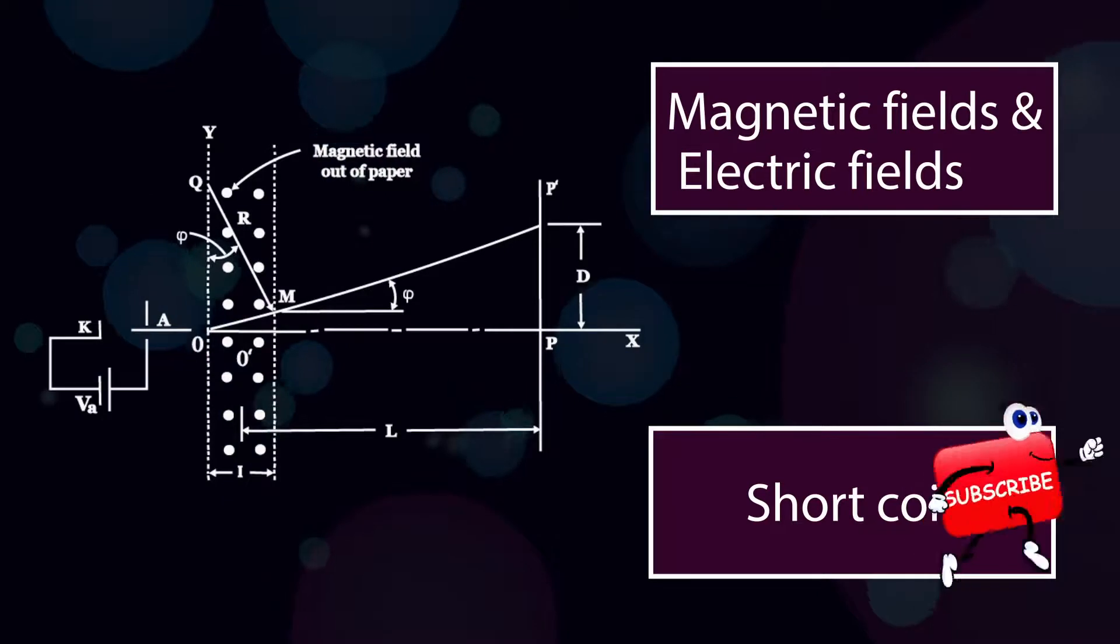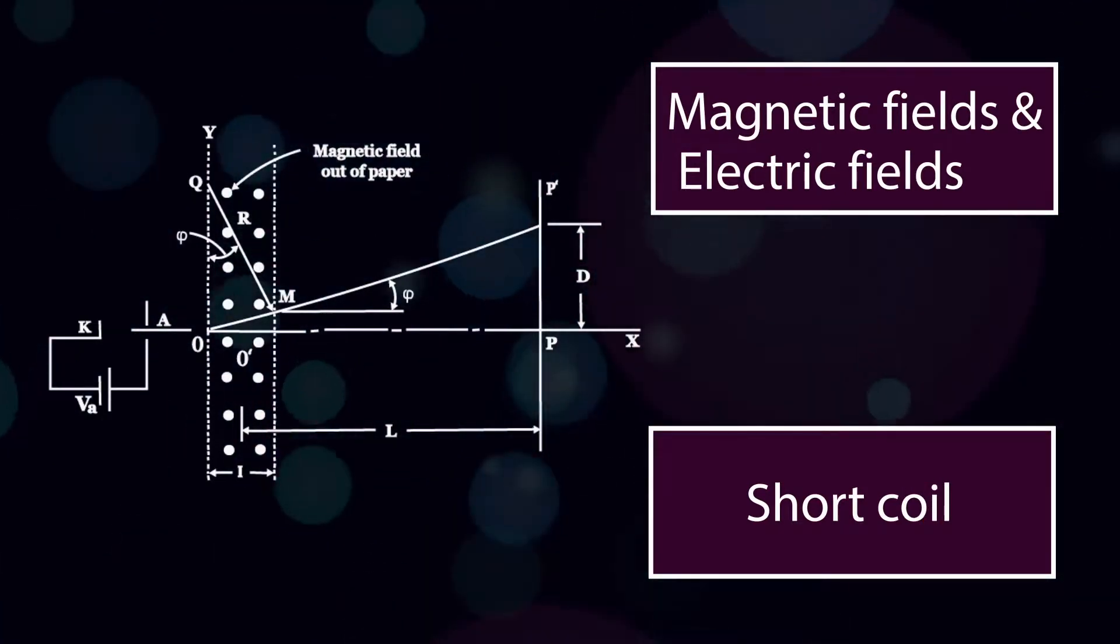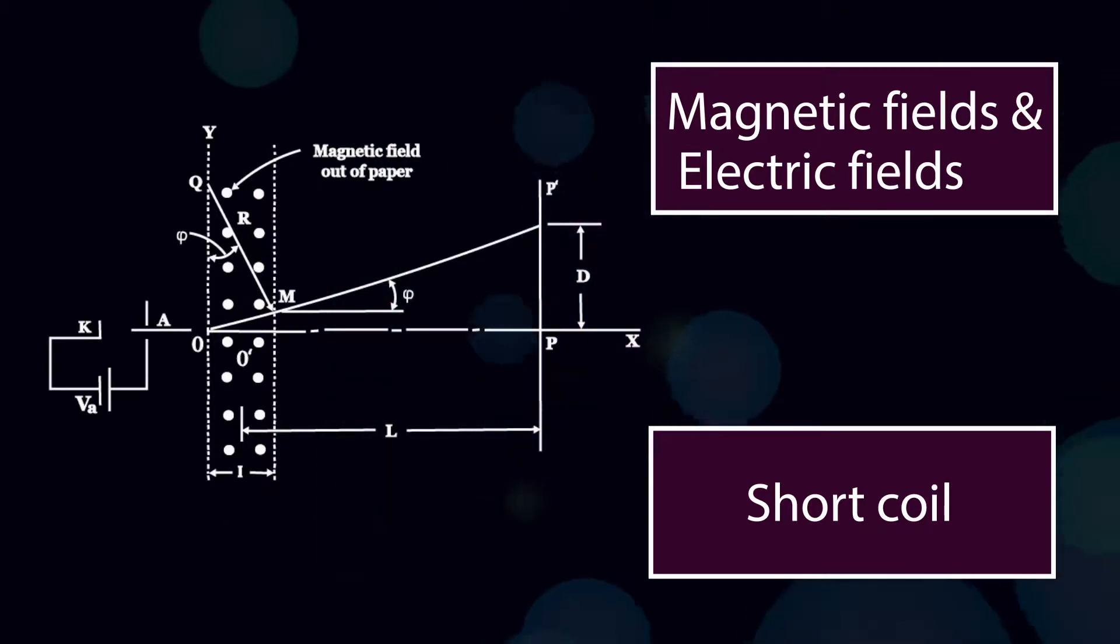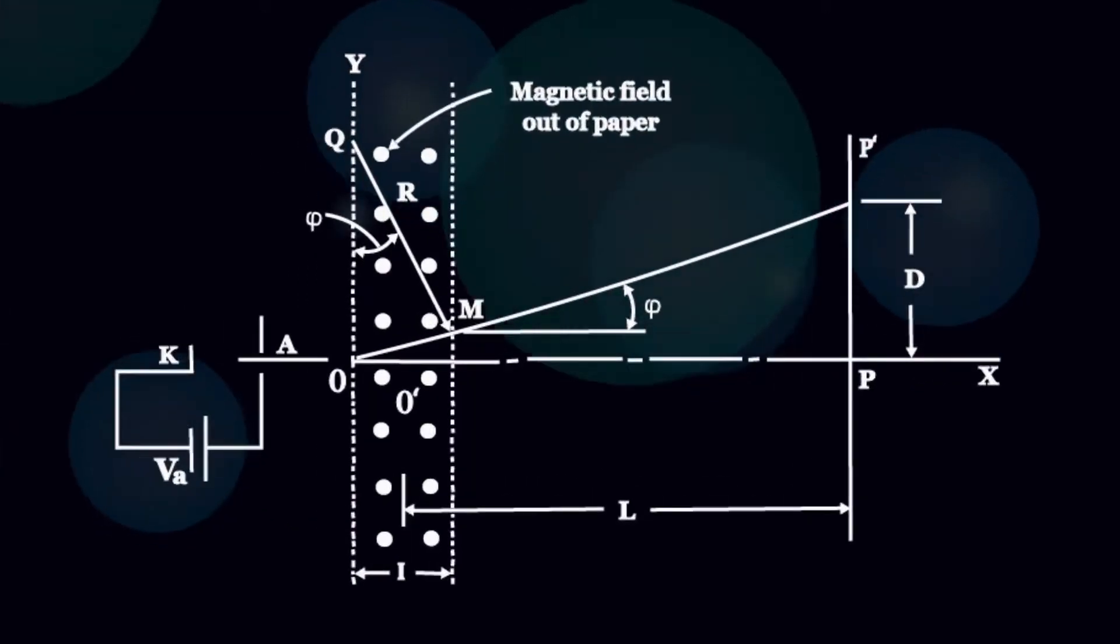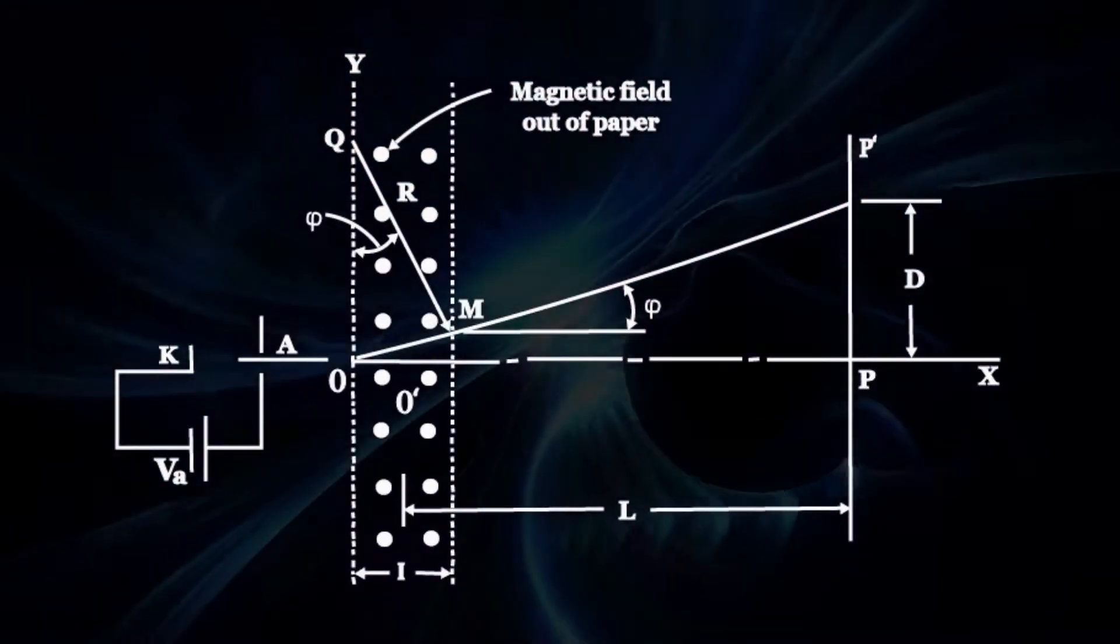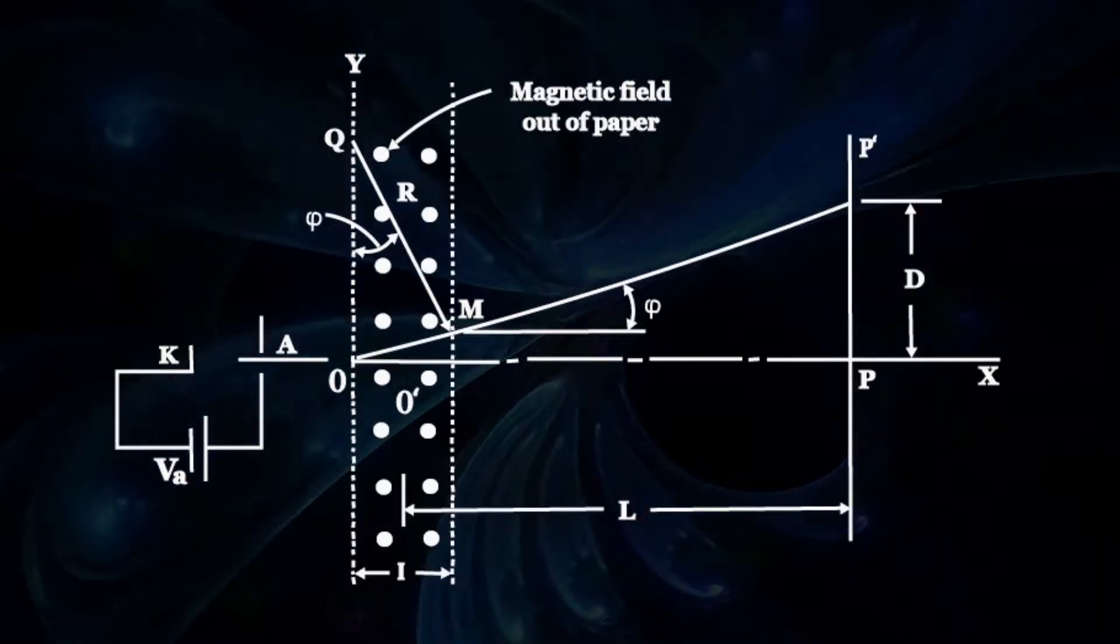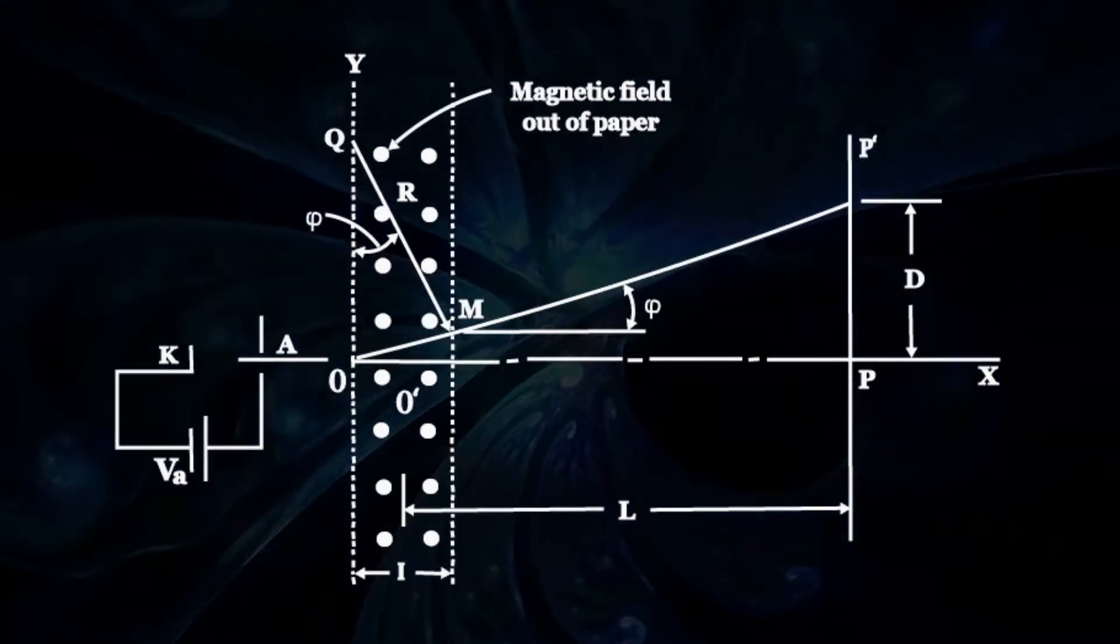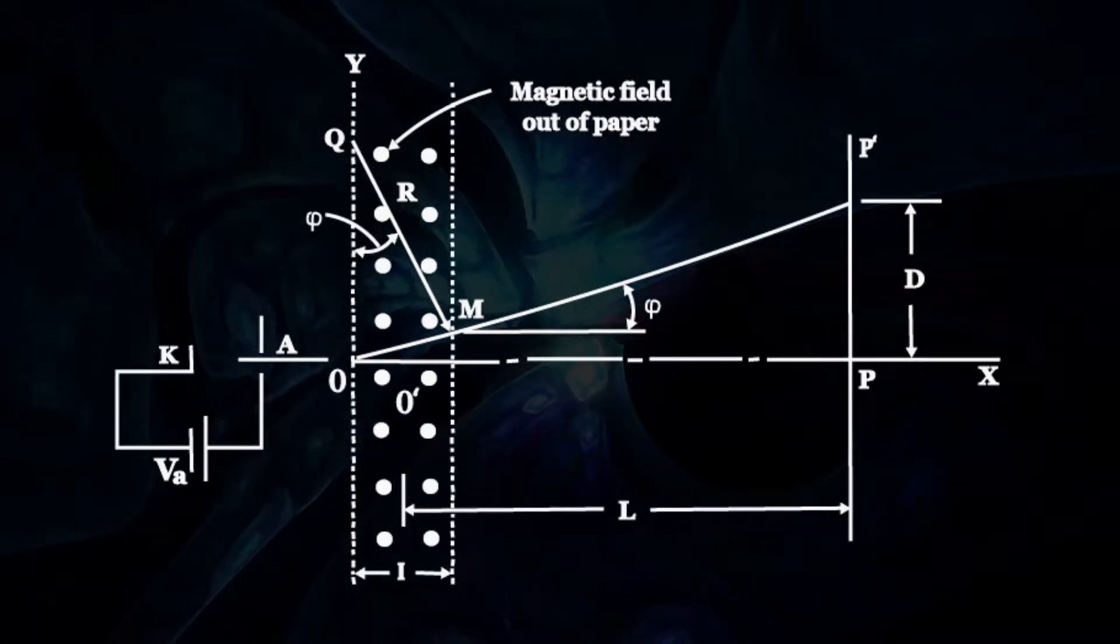Since it is not feasible to use fields extending over the entire length of the tube, a short coil furnishing a transverse field in a limited region is employed as shown here. The magnetic field is taken as pointing out of the paper and the beam is deflected upwards. It is also assumed that the magnetic field is uniform in the restricted region and the region outside is field-free.